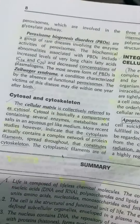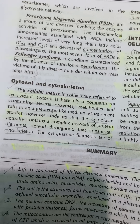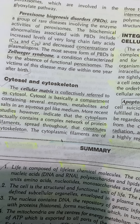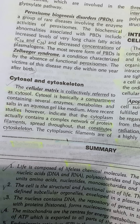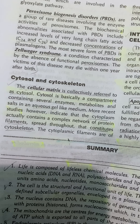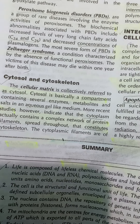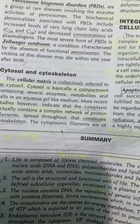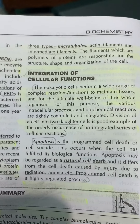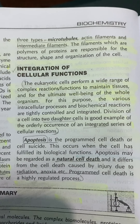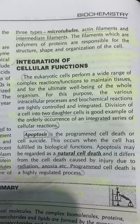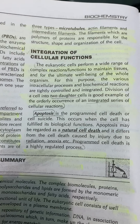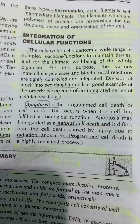The cellular matrix is collectively referred to as cytosol — basically a compartment containing several enzymes, metabolites, and salts in an aqueous gel-like medium. More recent studies indicate that the cytoplasm actually contains a complex network of protein filaments spread throughout, constituting the cytoskeleton. The cytoplasmic filaments are of three types: microtubules, actin filaments, and intermediate filaments — polymers of protein responsible for the structure, shape, and organization of the cell.